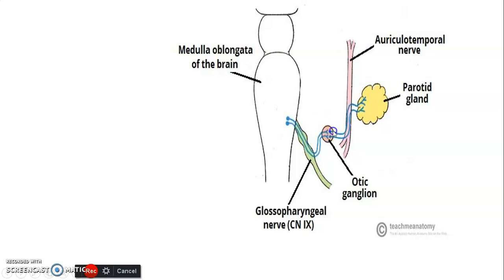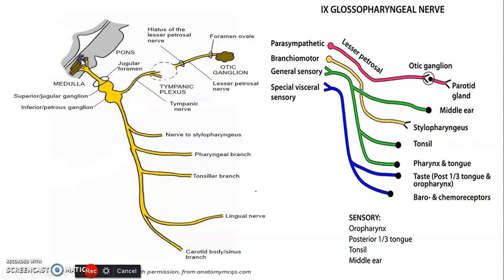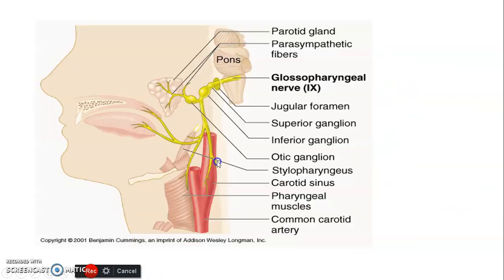Post-ganglionic fibers from the otic ganglion innervate the parotid gland, causing secretion. The branches of the glossopharyngeal include: branchial motor fibers to stylopharyngeus, general sensory to the middle ear, tonsil, pharynx and tongue, special visceral providing taste to the posterior third of the tongue, baroreceptors to the carotid sinus, and chemoreceptors to the carotid body.